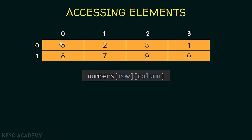Let's take an example. Suppose that I want to access this element over here. As you can see this element is in the first row and also in the first column. So to access this element I'm going to say numbers[0][0] — the element in row zero and column zero. So numbers[0][0] will give me the number five. Let's take the number three — it is in the first row, so the index of the row is zero, and it is in the third column, so the index of the column is two. So to access this element we say numbers[0][2]. Finally, let's take this element — it is in the second row, so the index of the row is one, and also it is in the fourth column, so the index of the column is three. So to access this element we say numbers[1][3].